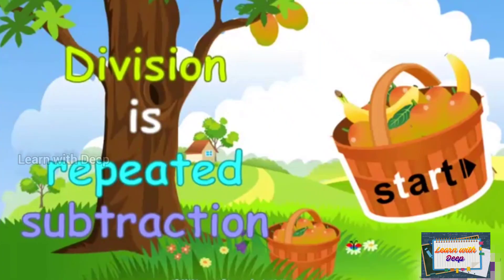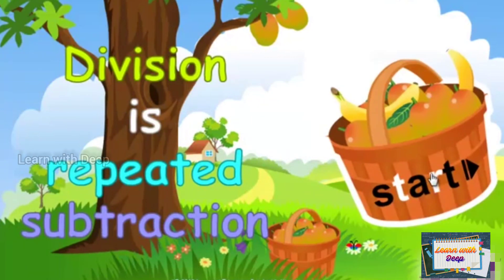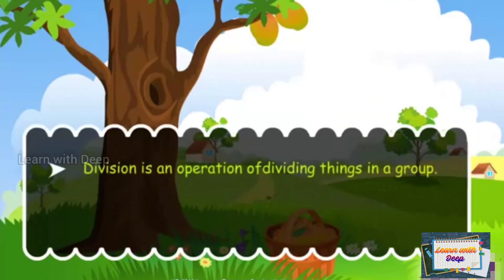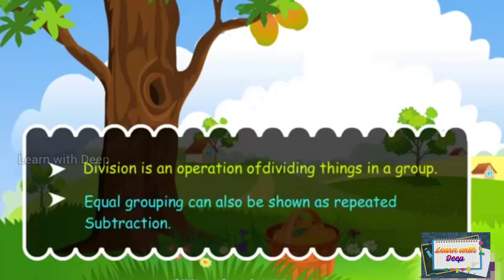Today we will learn that division is repeated subtraction. Division is an operation of dividing things in a group. Equal grouping can also be shown as repeated subtraction.